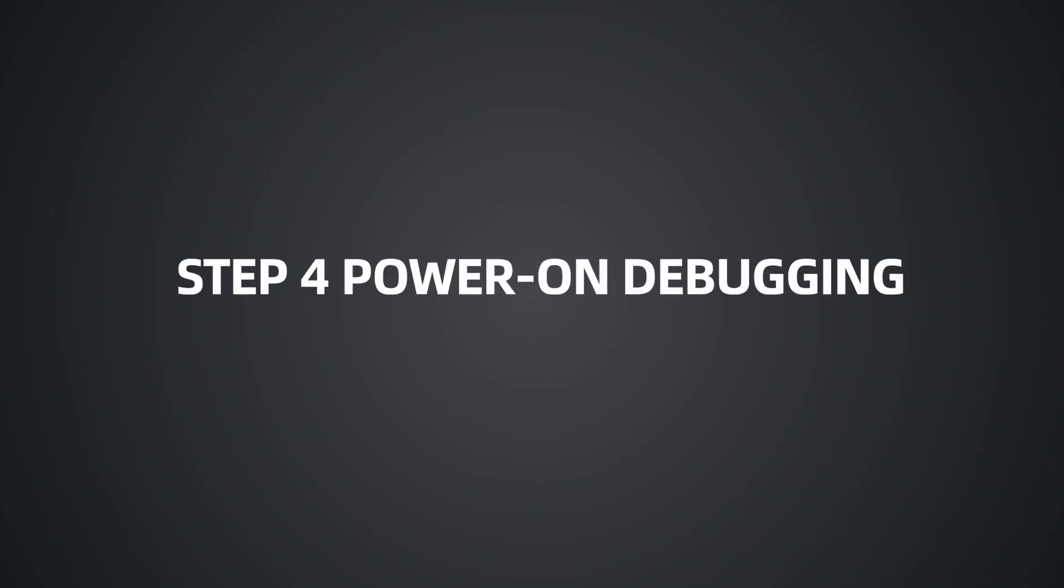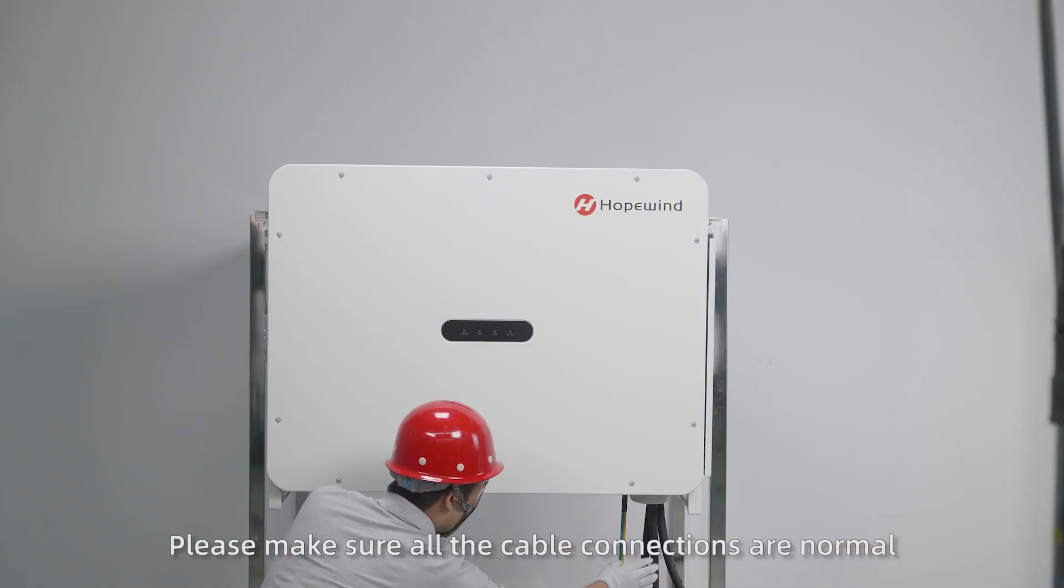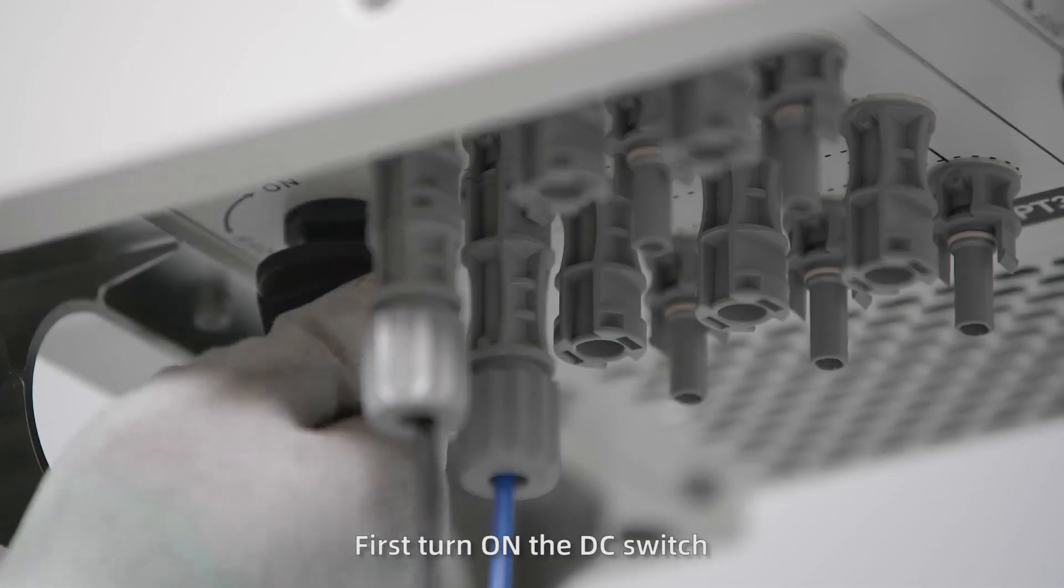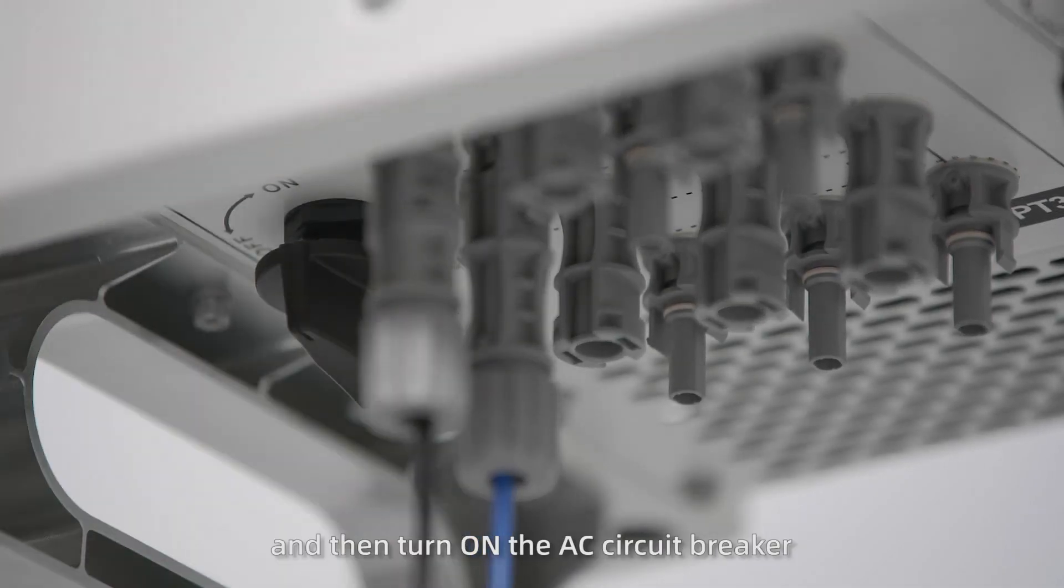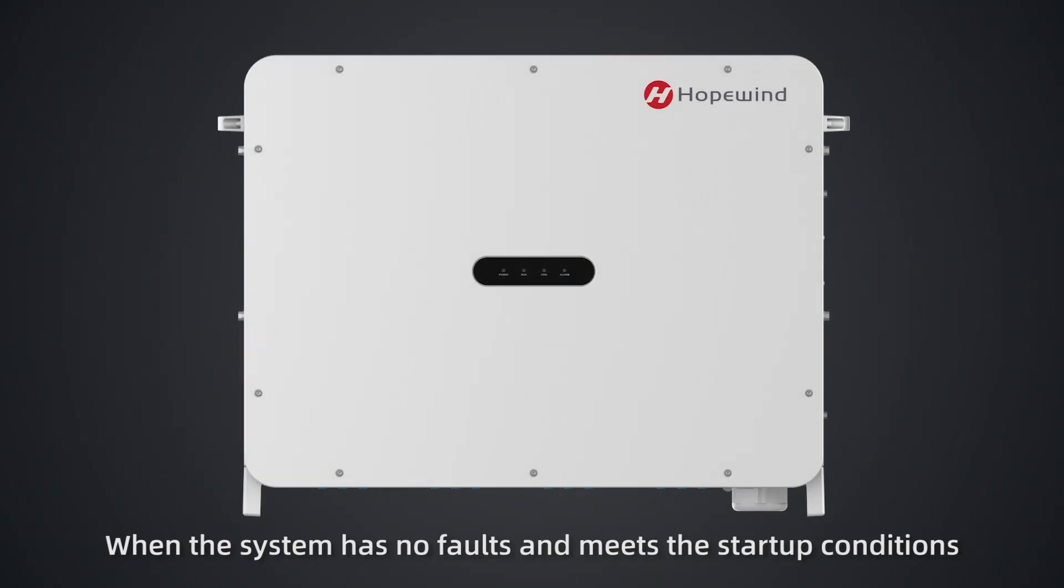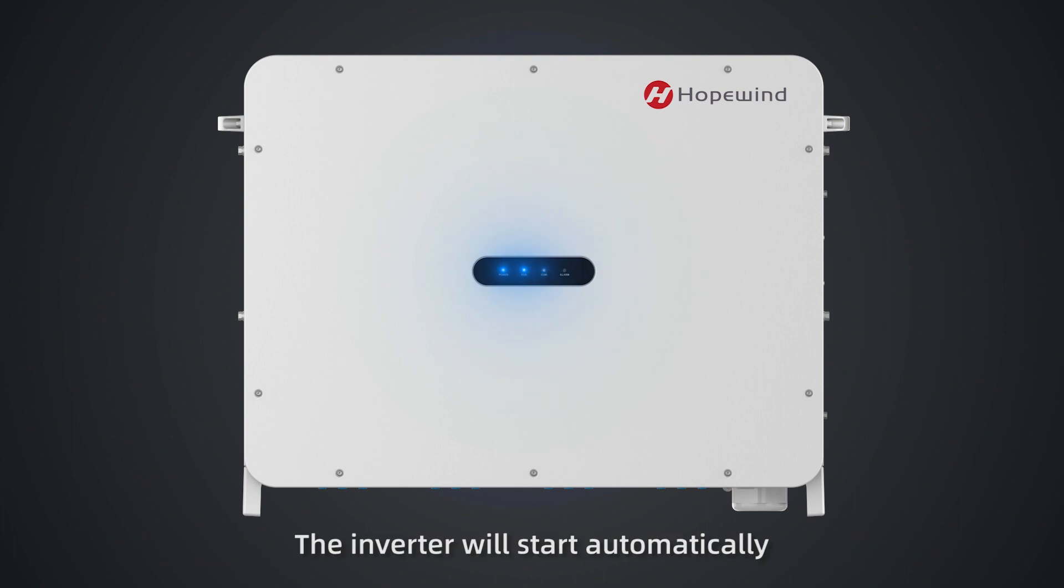Step 4: Power on debugging. Please make sure all the cable connections are normal and stable before power on debugging. First turn on the DC switch, and then turn on the AC circuit breaker. When the system has no faults and meets the startup conditions, the inverter will start automatically.